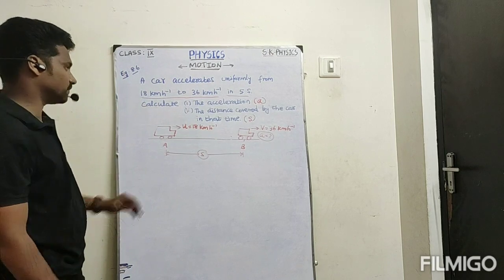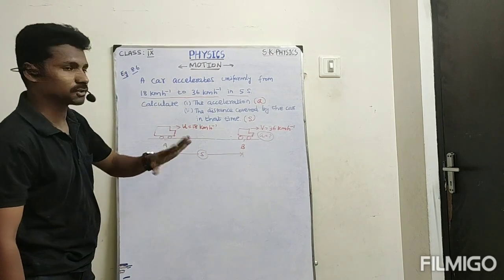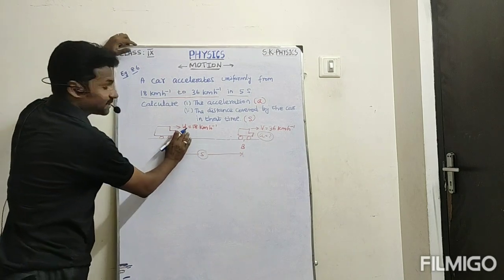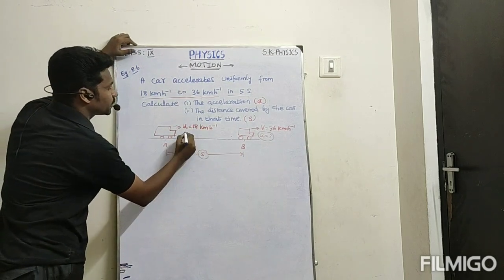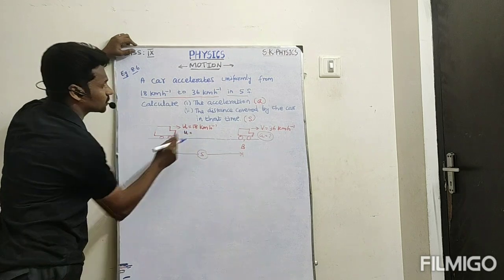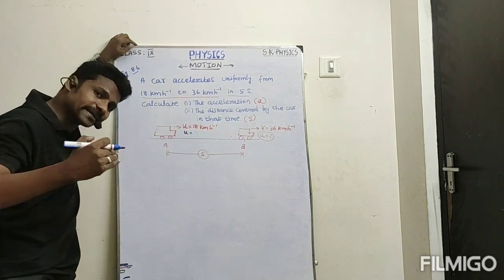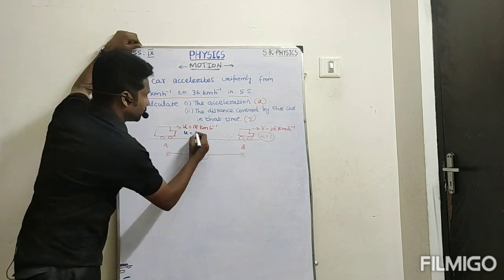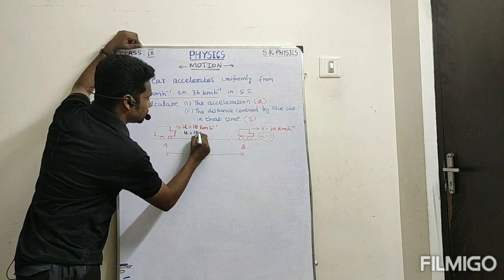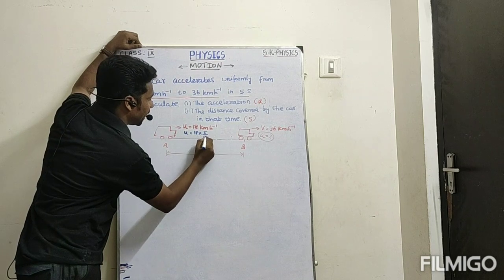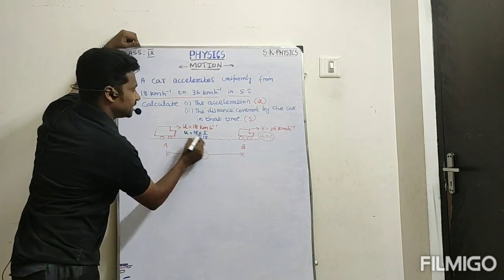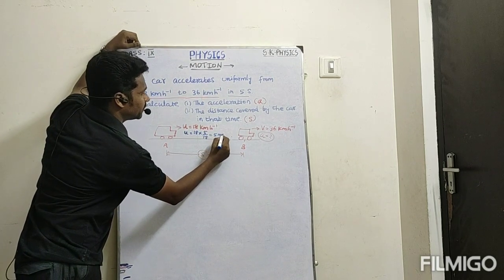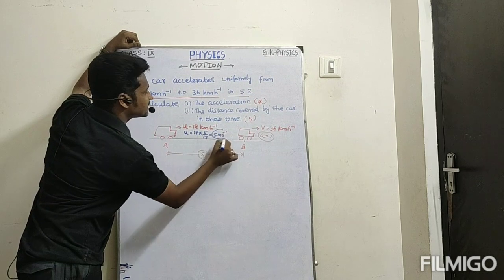Now see how to approach this question. First, you should convert kilometer per hour into meter per second. Let us take U value. To convert km/h to m/s, multiply by 5 by 18. So U equals 18 into 5 by 18 — the 18 cancels — giving 5 meter per second. This is the initial velocity.